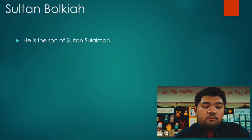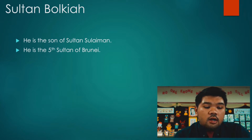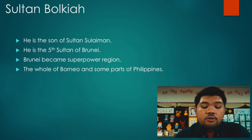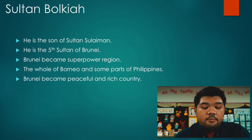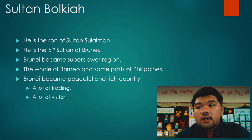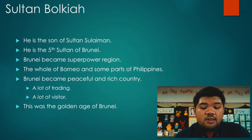Who is Sultan Bolkiah? Sultan Bolkiah is the son of Sultan Suleiman, our fourth Sultan of Brunei. After Sultan Suleiman resigned, Sultan Bolkiah became the fifth Sultan of Brunei. Since Sultan Bolkiah became king, Brunei became a very powerful region that could control the whole of Borneo and some parts of the Philippines. Brunei also became a very peaceful and rich country because there was a lot of trading and many visitors came to Brunei. This was the golden age of Brunei, as the Brunei empire was at its greatest level.